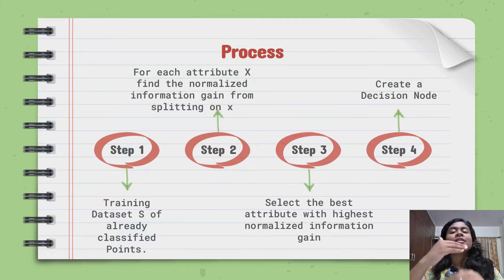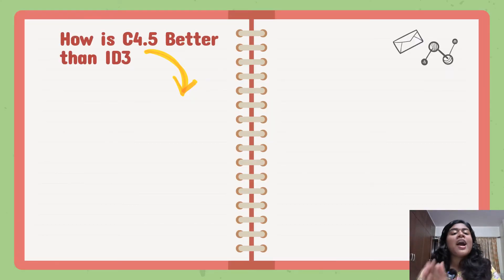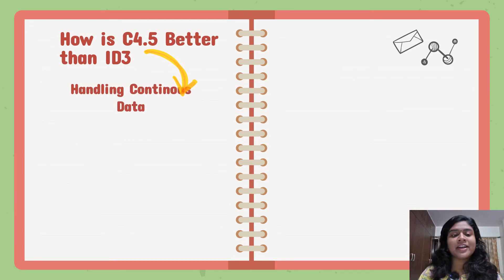Now this process will go on till a certain point. There are several ways when this process will stop. The process will stop when you have correctly classified everything into one particular class. So this was the entire process of C4.5. Now if C4.5 has come into place, it would have something much better than ID3. So now let's see the improvements which have taken place in C4.5.